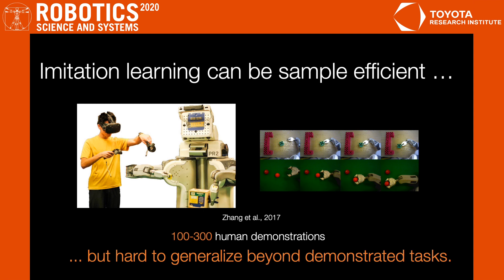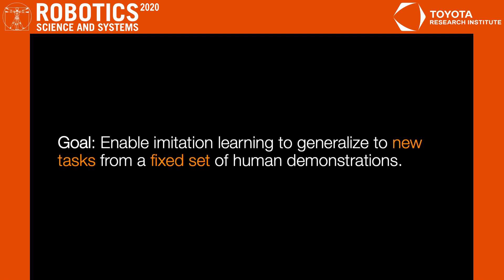However, it is difficult to generalize beyond the tasks shown in the human demonstrations. Our goal is to enable imitation learning to generalize to new tasks from a fixed set of human demonstrations.